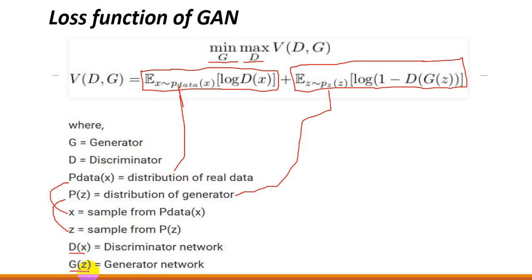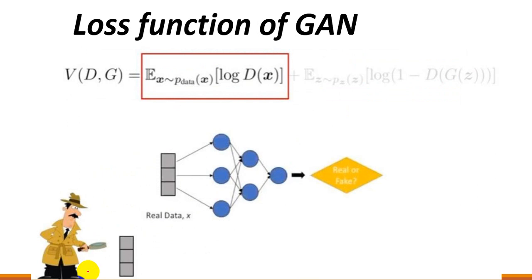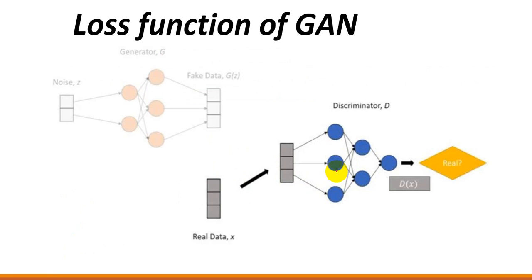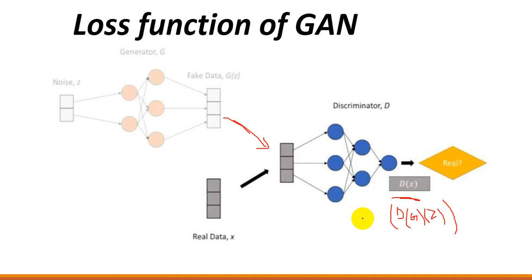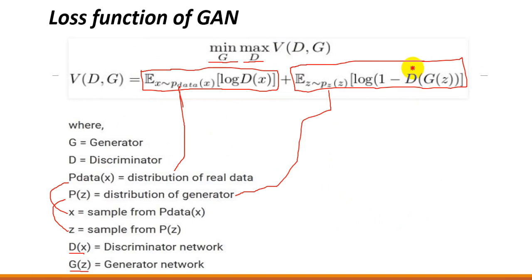First, I will talk about the first part, which represents the expectation of the discriminator. We have taken data from real images and given it to the discriminator, and this discriminator represents 0 or 1 as output. When you use fake data in the second part, the formula changes. So when you give fake data to your discriminator, the formula for D changes accordingly. This is according to the formula: this part was due to fake images, and this part was due to our real images — the distribution of real images.